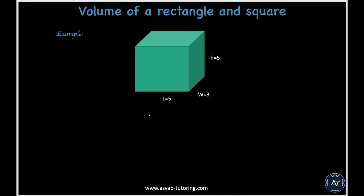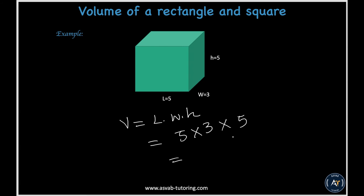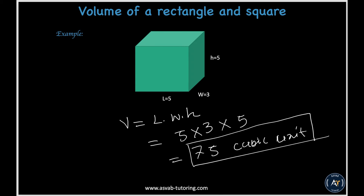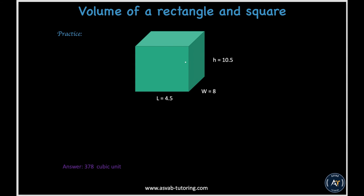Now we'll learn how to find the volume of a box — whether it's a square box or rectangular box, the method is the same. Volume equals length times width times height. With length 5, width 3, and height 5: 5 times 3 is 15, times 5 gives 75 cubic units.